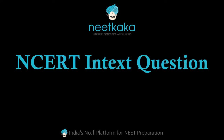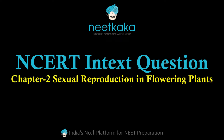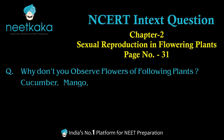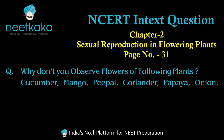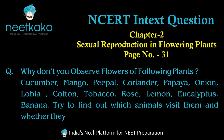Hello guys, in the Biology NCERT in-text question series, this is Class 12 Chapter 2 — Sexual Reproduction in Flowering Plants — page number 31. The question asks you to observe some flowers of the following plants: cucumber, mango, peepal, coriander, papaya, onion, lobia, cotton, tobacco, rose, lemon, eucalyptus, and banana. Try to find out which animals visit them and whether they could be pollinators.